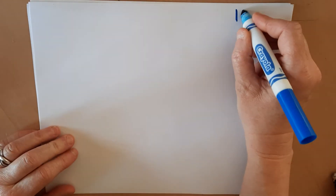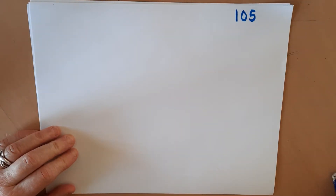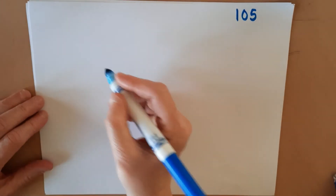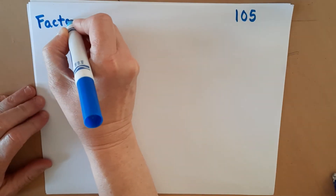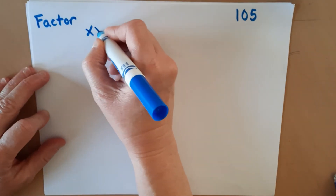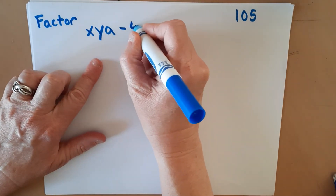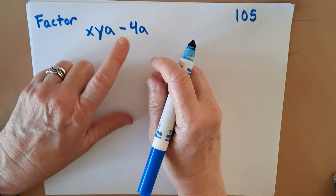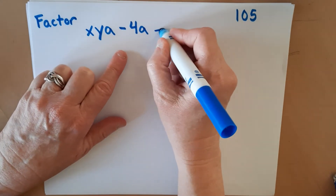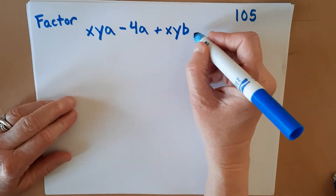We're going to go on to lesson 105, which also involves factoring — factoring things out. This one is factoring by grouping. You'll see a problem that looks like this. It'll say 'factor,' which just means to divide out — it's like doing the opposite of the distributive property. So if we have XYA minus 4A plus XYB minus 4B, it's really important to watch the signs as usual.